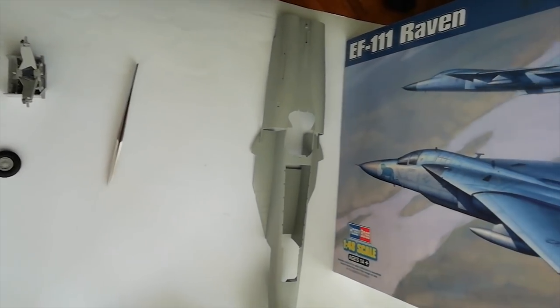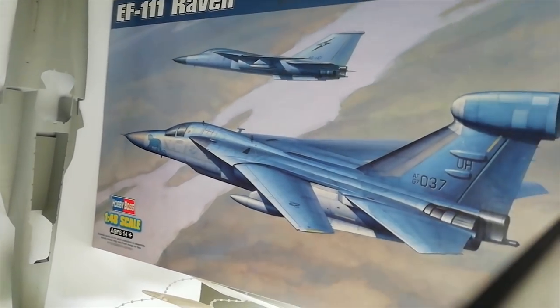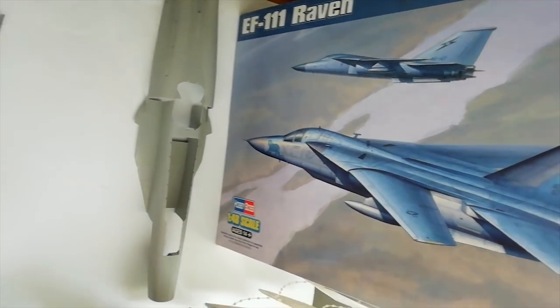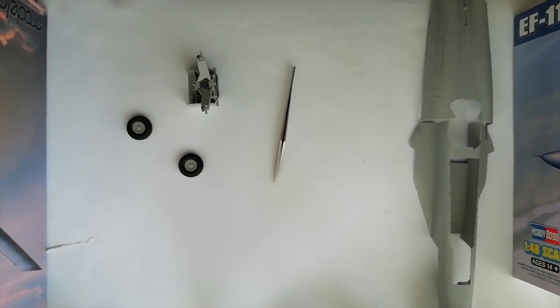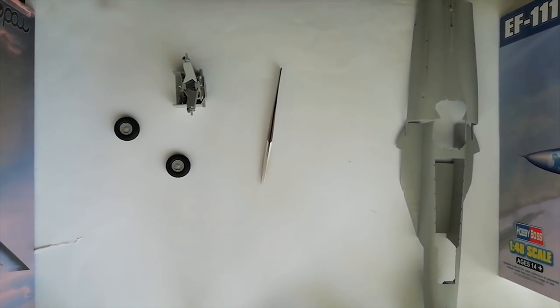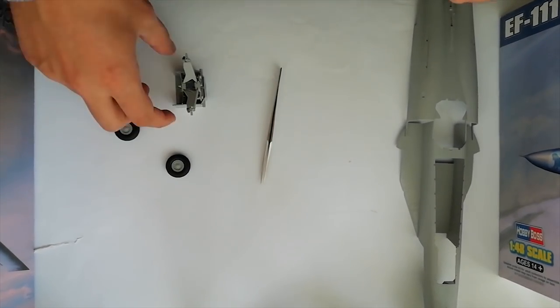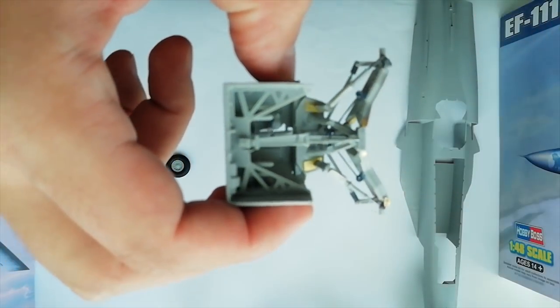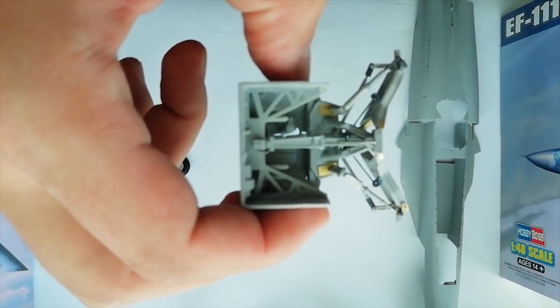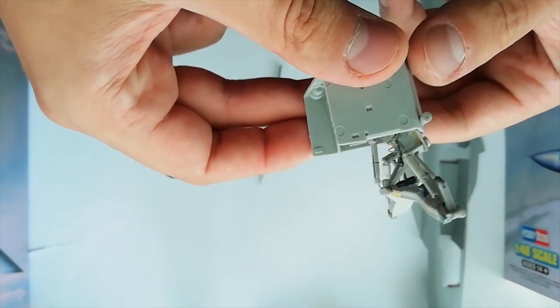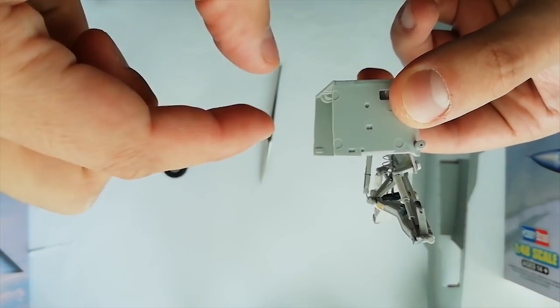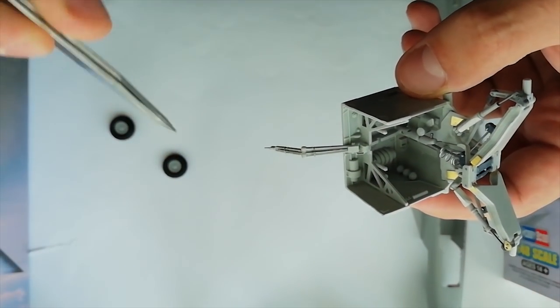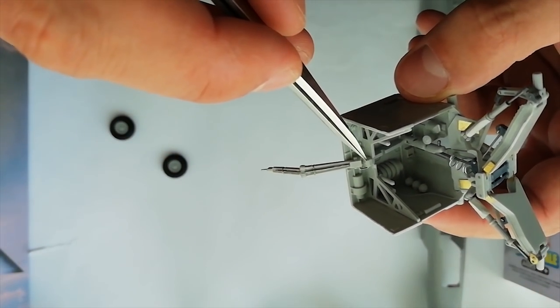Hey guys, Mitko here from DNmodels. What you'll be looking at during this short video is the main landing gear section of Hobby Boss EF-111 Raven. This is currently an ongoing project being built by Milan Mitiv, one of the master modelers that I have the pleasure of working with.